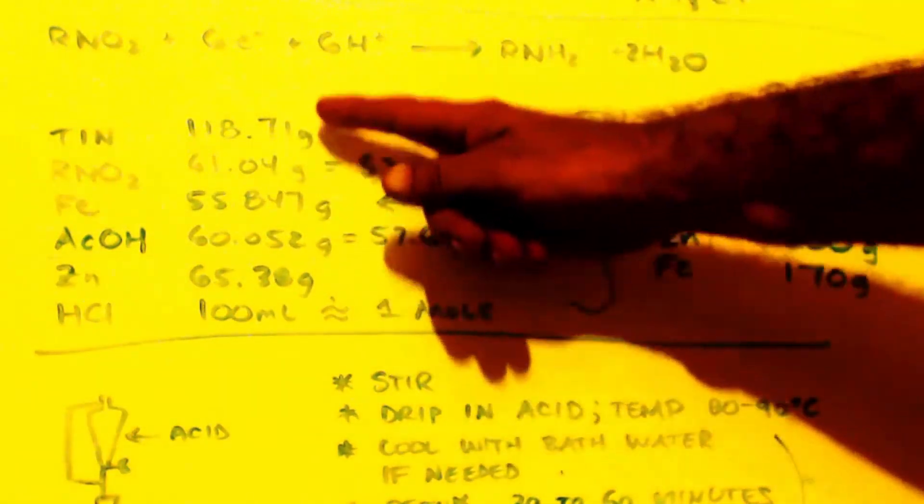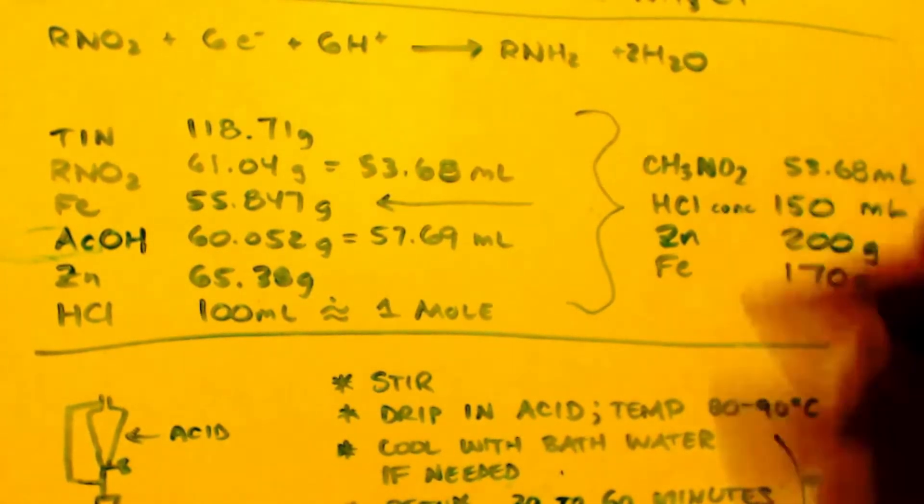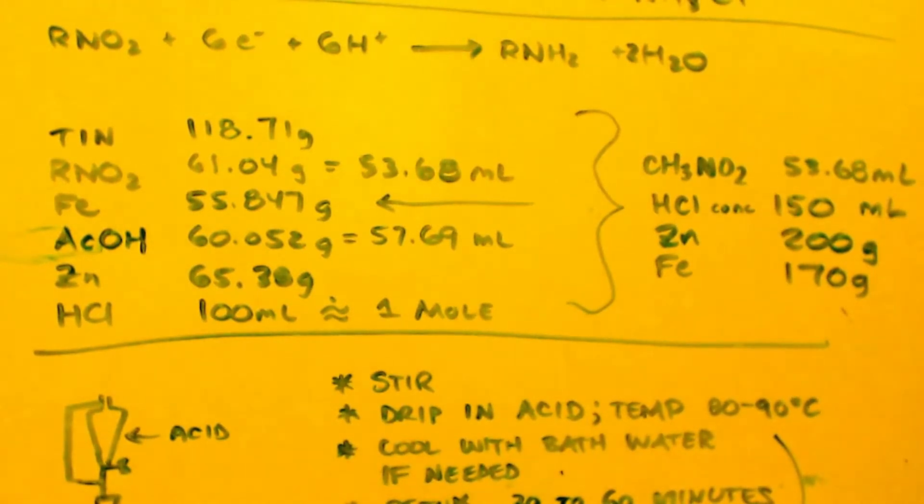These are molar amounts, by the way, over here, folks. Now in my example, I'm going to use one mole of nitromethane, which is 53.68 milliliters. I'm going to use concentrated hydrochloric acid or whatever they have at the hardware store, which is usually 32, 32 and a half percent, and that's usually about 100 milliliters, just like a mole, maybe a mole and slightly more than a mole, but it's close to a mole. So I'm going to use a mole and a half. Now why am I going to use a mole and a half when it says I should use six moles of protons?